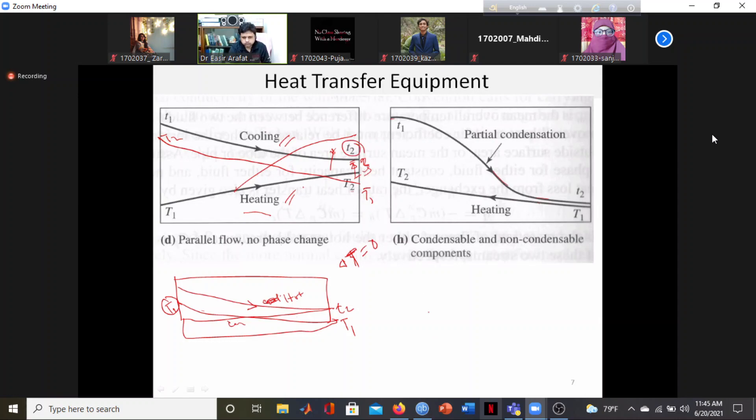Counter flow arrangement provides maximum heat transfer compared to parallel flow and cross flow. Parallel flow gives minimum heat transfer with the same arrangement. Counter flow allows more effective temperature differences.